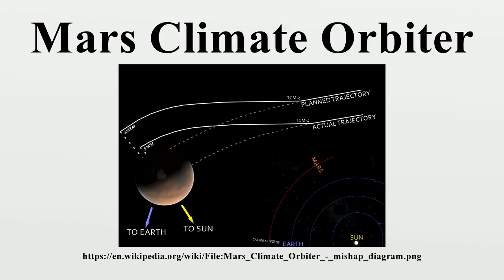This was specified in the contract between NASA and Lockheed. The spacecraft encountered Mars on a trajectory that brought it too close to the planet, causing it to pass through the upper atmosphere and disintegrate.